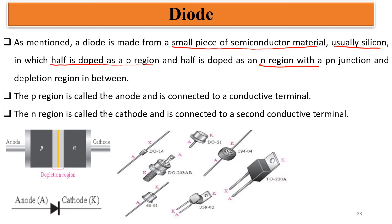We now have all those things in one single silicon-doped atom. The P region is called the anode and it is always connected to a conductive terminal. The N region is also called the cathode and it is connected to a second conductive terminal. So we are going to pass current through this diode. As we know, part of it is a P region, meaning there are more positive ions — the absence of electrons. And in the N region, we have more electrons as negative charges. We connect the anode to the positive side and the cathode to the negative part.